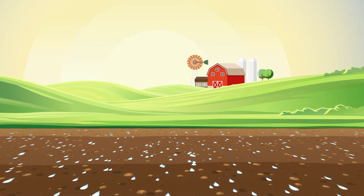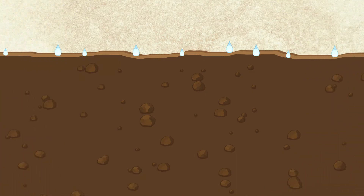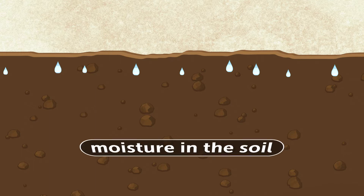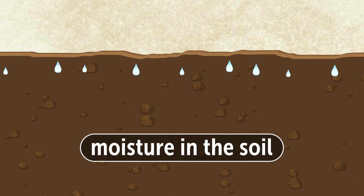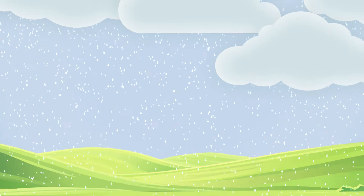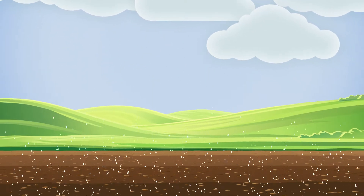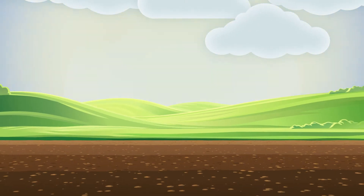Those water droplets then drop down into whatever surface they were resting on during the winter. In this case, the water drops into the farmer's soil. This is known as moisture in the soil.